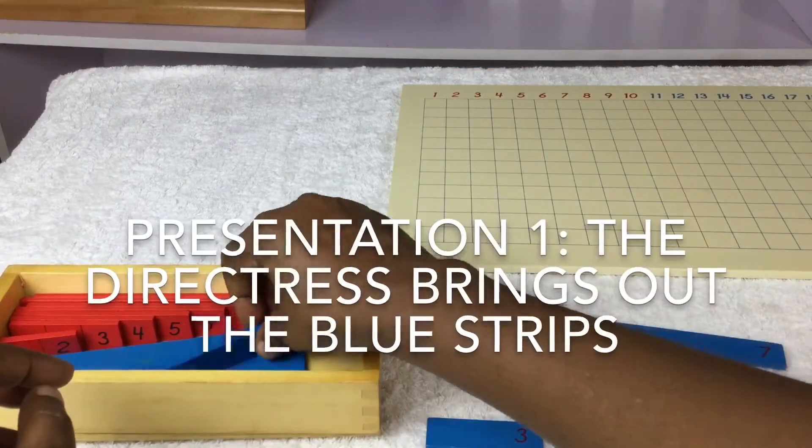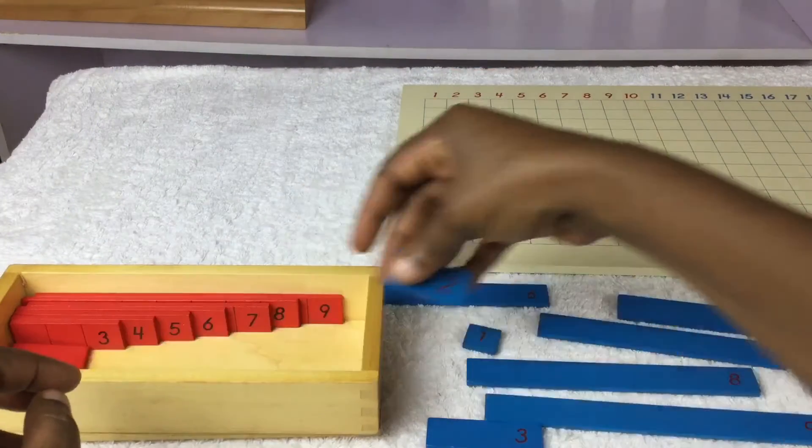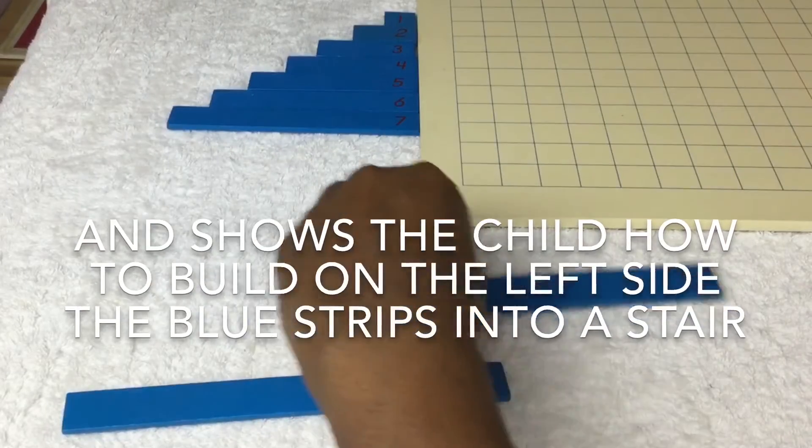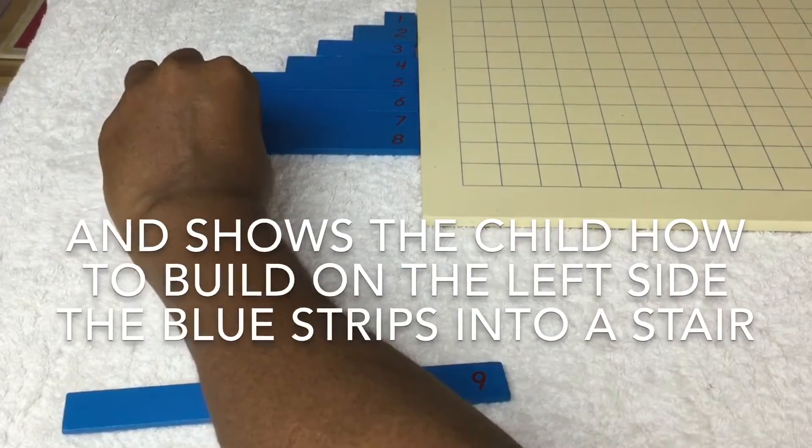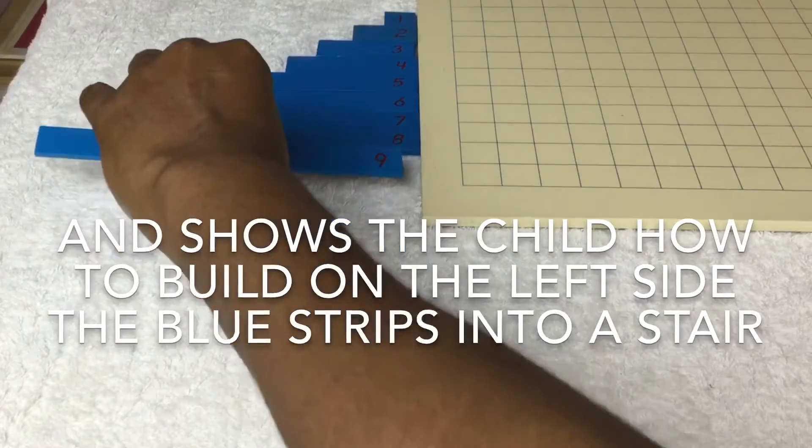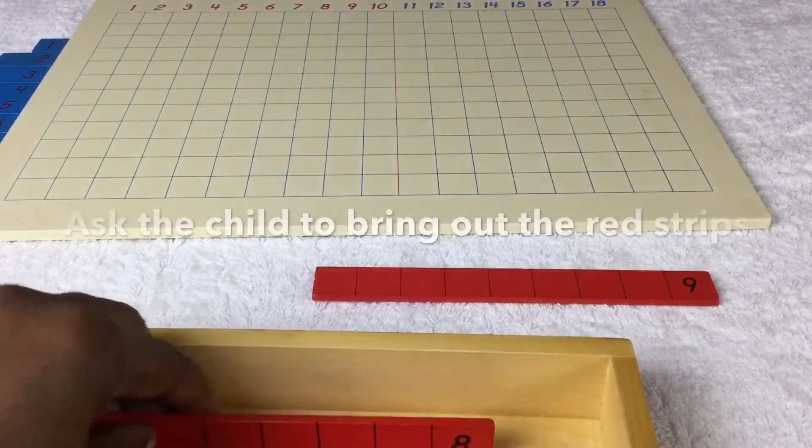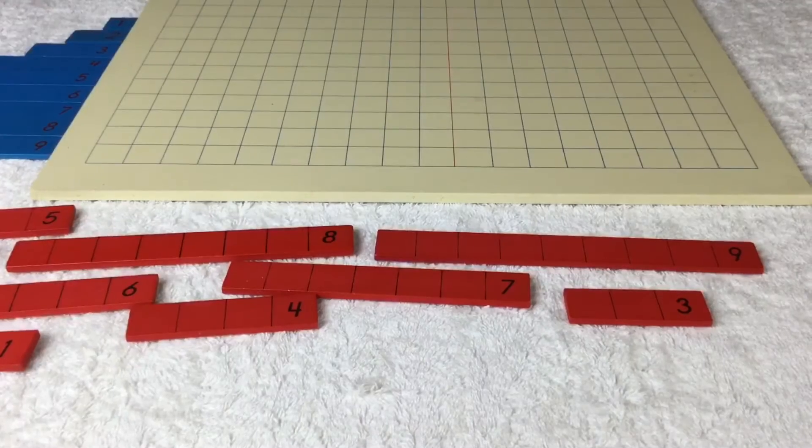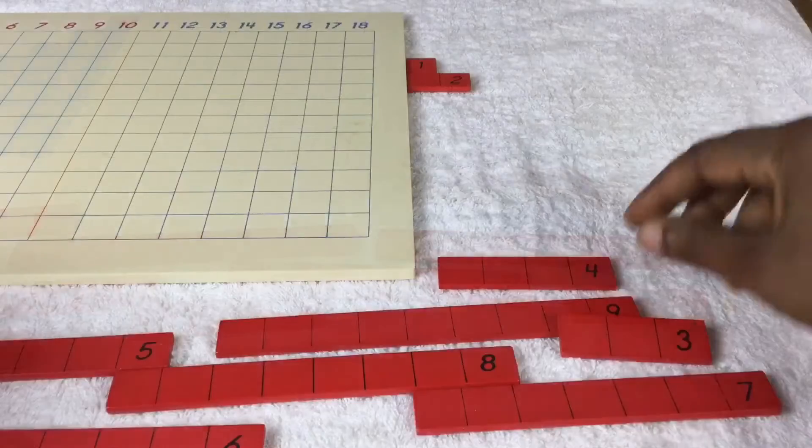Presentation one. The directress brings out the blue strips and shows the child how to build on the left side the blue strips into a stair. Ask your child to bring out the red strips and build to the right side the red strips into a stair.